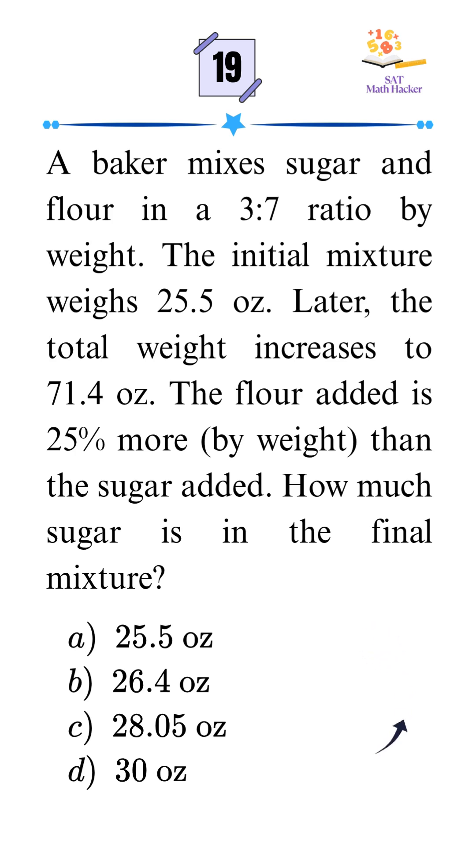We're given a ratio problem involving sugar and flour. A baker mixes them in a 3 to 7 ratio, and the initial batch weighs 25.5 ounces.